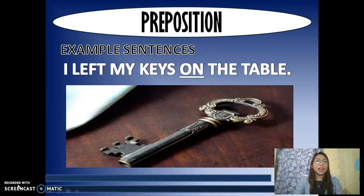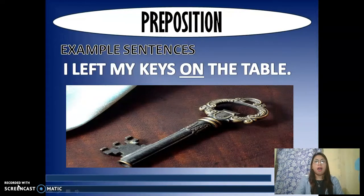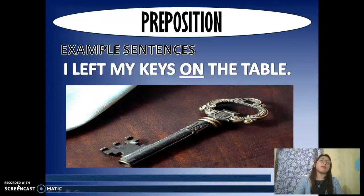In the sentence 'I left my keys on the table,' the preposition on indicates where the keys are, and the table serves as the object of that preposition.